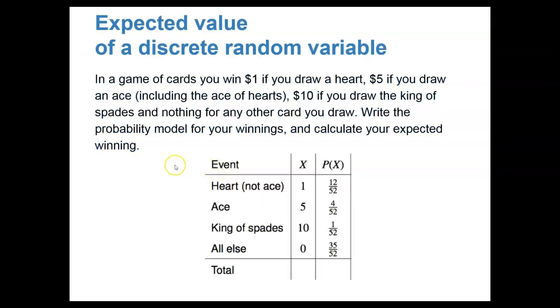Let's see if we can write a probability model for our winnings, and calculate the expected value for my winnings. So we begin by drawing a table. Notice that in the columns of the table, we have the events listed for drawing a card from the deck. So I could get a heart that's not an ace. I could get an ace. I could get the king of spades. And then all other cards are listed as all else.